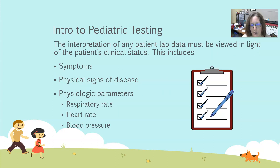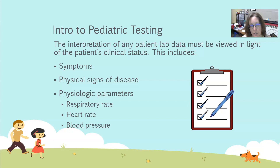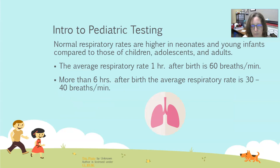The interpretation of any patient lab data has to be viewed in light of the patient's clinical status. This applies to adults also but is especially true for the pediatric population. This includes evaluating their symptoms, their physical signs of disease, and physiologic parameters such as respiratory rate, heart rate, and blood pressure.